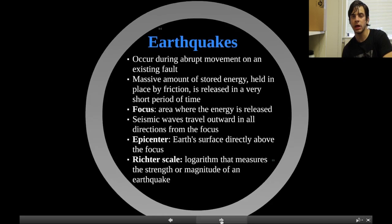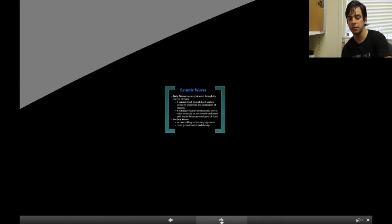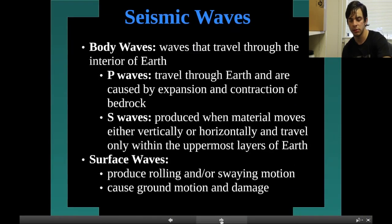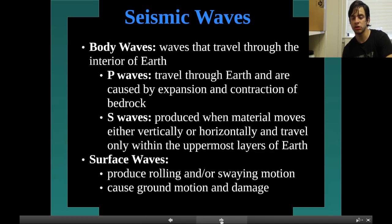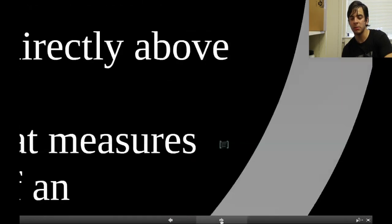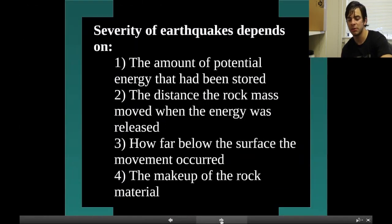Seismic waves include body waves, which travel through the interior of Earth. P waves travel through Earth and are caused by expansion and contraction of bedrock. S waves are produced when material moves either vertically or horizontally and travel only within the uppermost layers of Earth. Surface waves produce rolling and/or swaying motion, causing ground motion and damage.